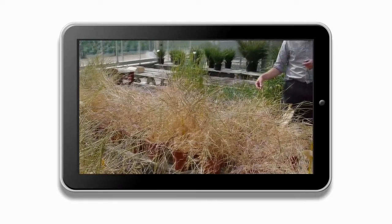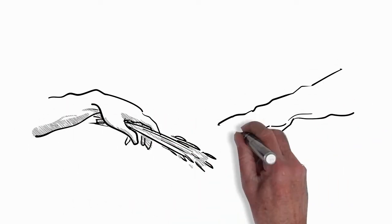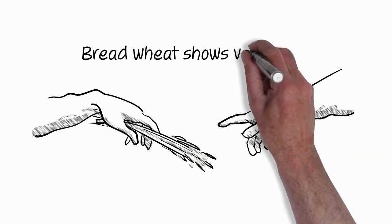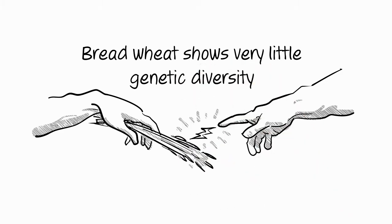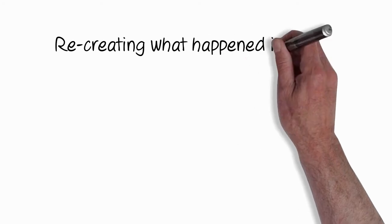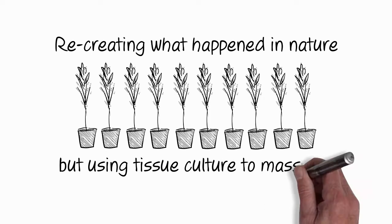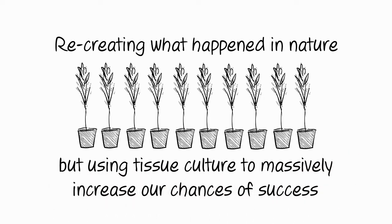When this happened in nature, naturally about 10,000 years ago, it would have only happened so infrequently. There's a very limited amount of genetic diversity in bread wheat. So we're recreating what happened in nature 10,000 years ago but trying to use different progenitor species. And what we're expecting to see is different kinds of genes in the goat grass that we see here.